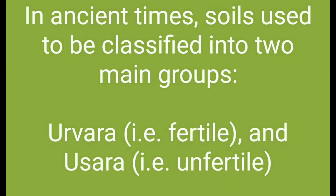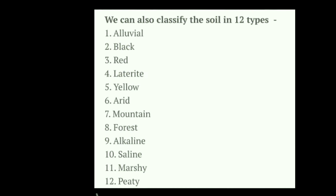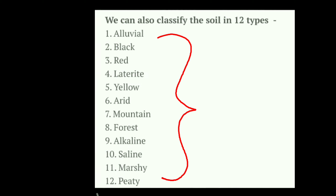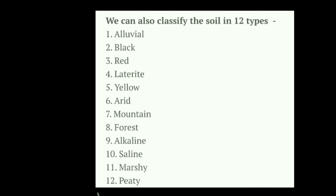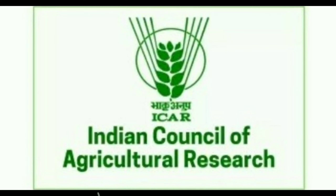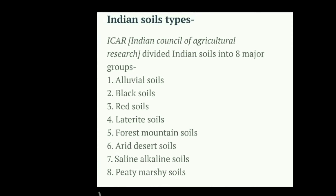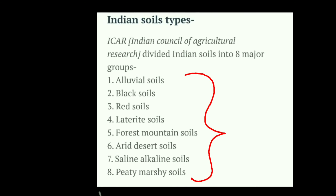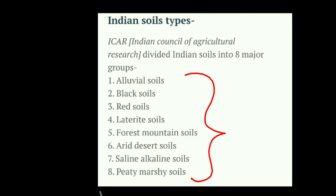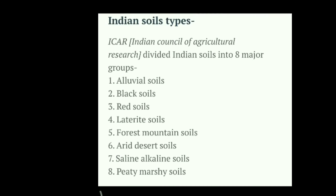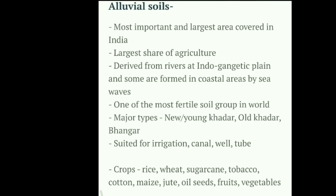We can classify soil into twelve types: alluvial, black, red, laterite, yellow, arid, mountain, forest, alkaline, saline, and marshy and peaty. But according to ICAR — Indian Council of Agricultural Research — Indian soils are categorized into eight major types: alluvial soil, black soil, red soil, laterite soil, forest and mountain soils, arid and desert soil, saline and alkaline soil, and peaty marshy soils.